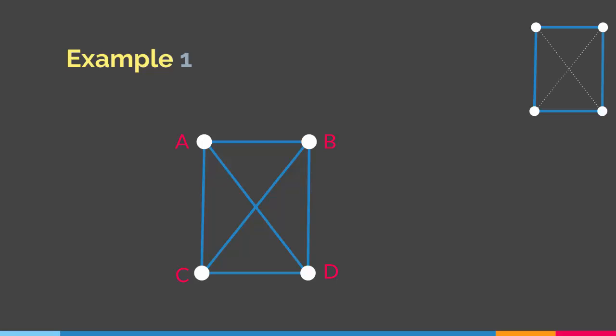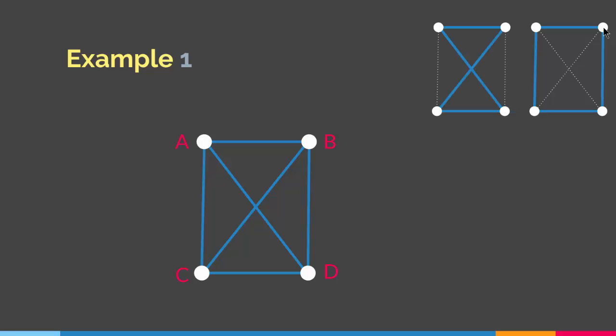This is one of them. There is a Hamiltonian path in this particular graph like this — we just go on the edges of the graph. We can start from any vertex and end at the same vertex, and we have hit every vertex exactly once. So this is a Hamiltonian circuit. This is another Hamiltonian circuit, and this is the last Hamiltonian circuit for this particular graph.